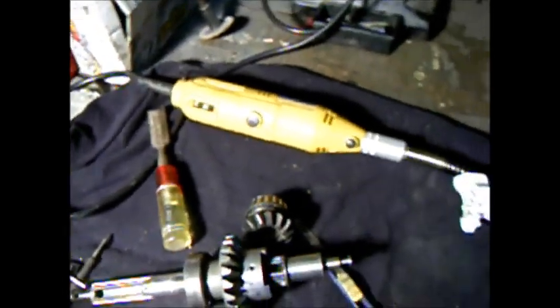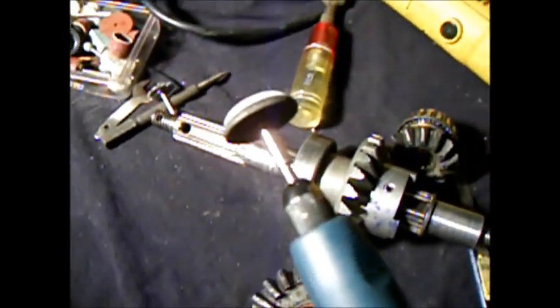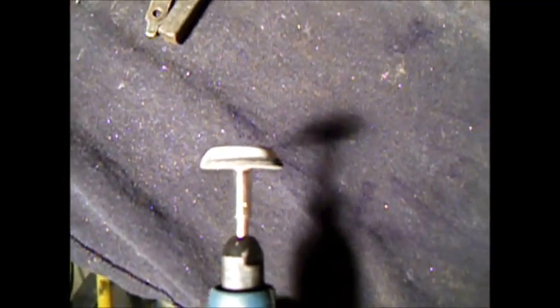So what I took is my $19 Dremel tool with an extension here, and I took a grinding disc, a grinding disc, and I made it tapered, right? So I ground it tapered and that's so I could hold it and grind in there.